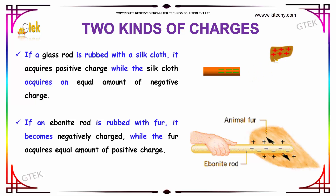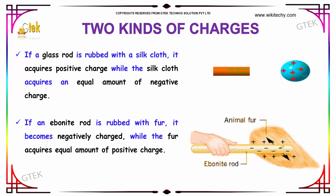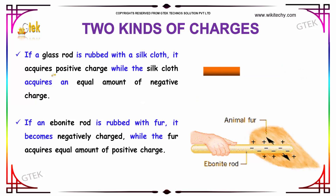You can see here very clearly. If you consider the ebonite rod, when it is rubbed with fur, it becomes negatively charged while the fur acquires an equal amount of positive charge. This was a kind of vice versa concept. These are the two kinds of charges, i.e. negative and positive charge, with an example depiction of glass rod and ebonite rod.